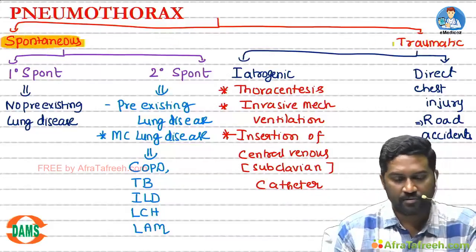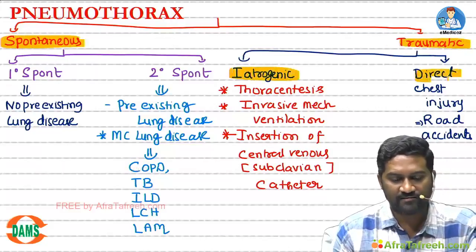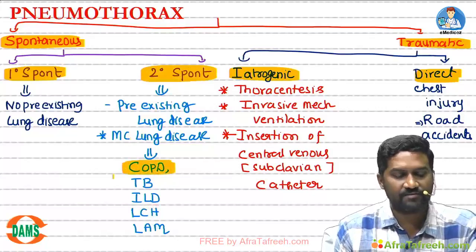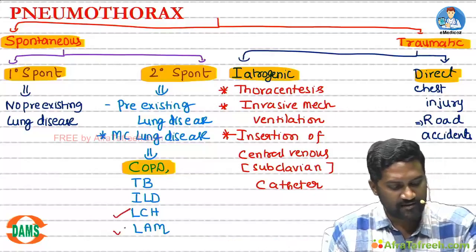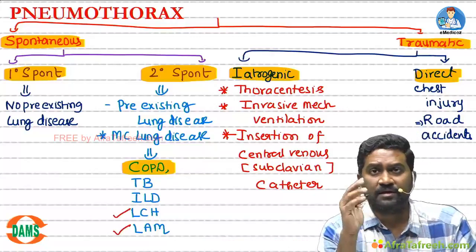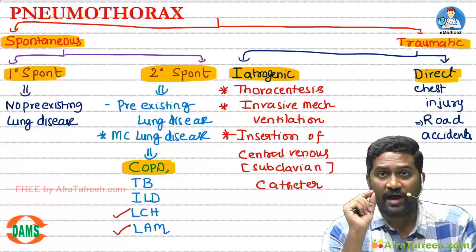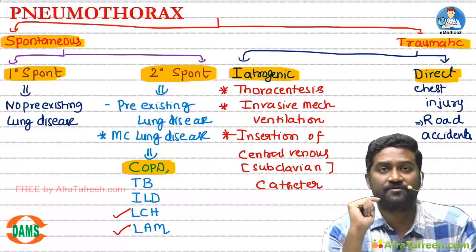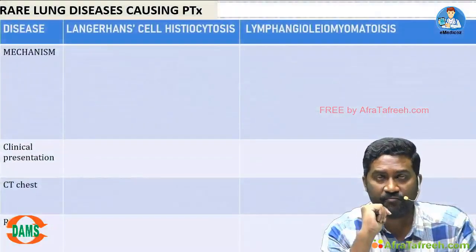To summarize the classification: spontaneous and traumatic; within traumatic — iatrogenic and direct chest injury; within spontaneous — primary and secondary. The most common lung disease responsible for pneumothorax is COPD. Rare lung diseases like LCH and LAM can also cause pneumothorax, and they have specific clinical scenarios which examiners use to frame questions.